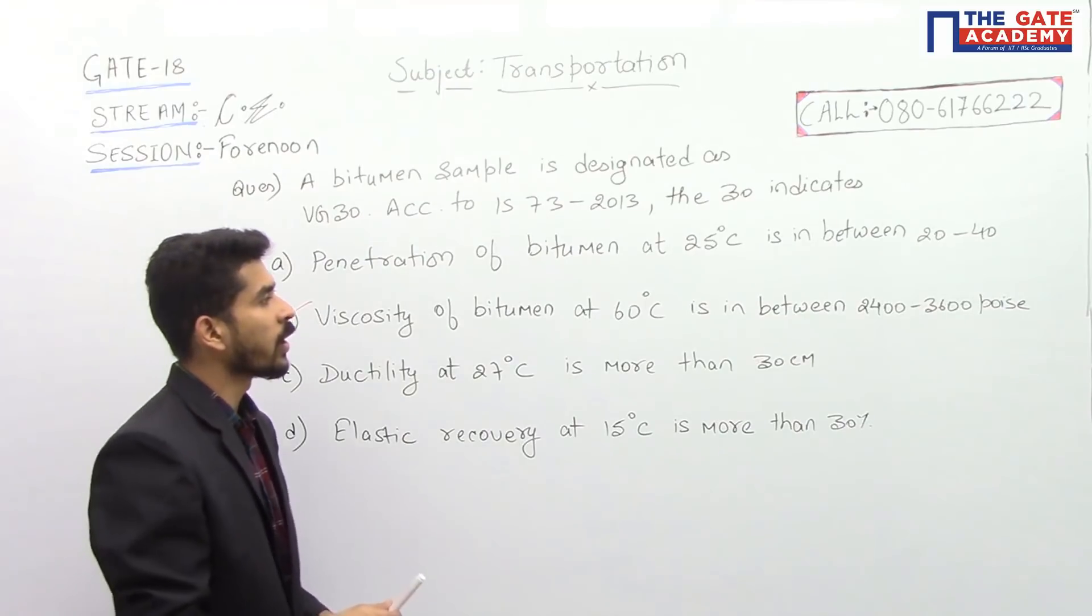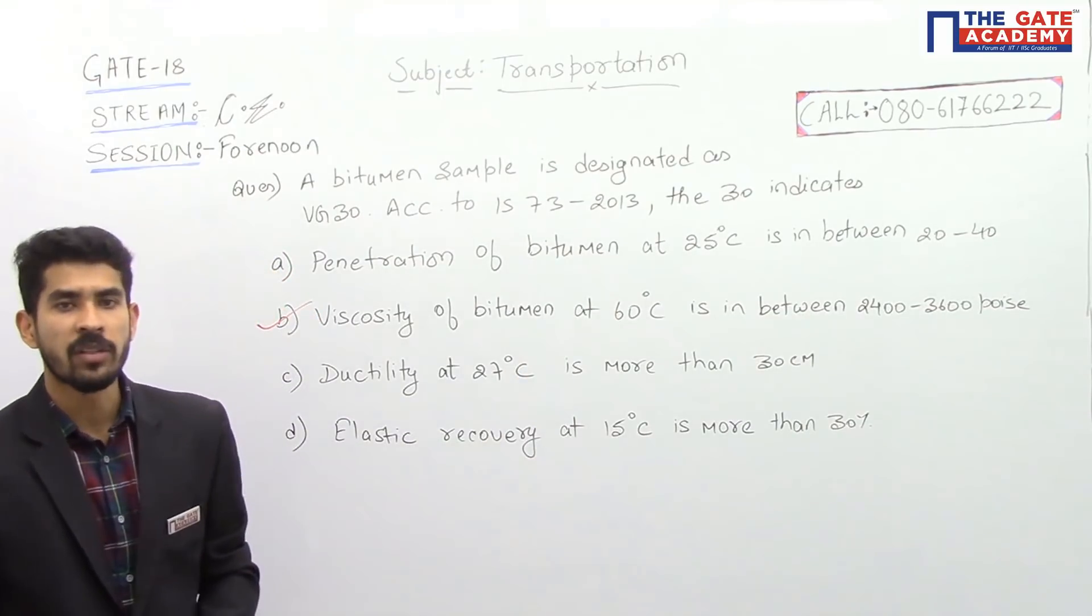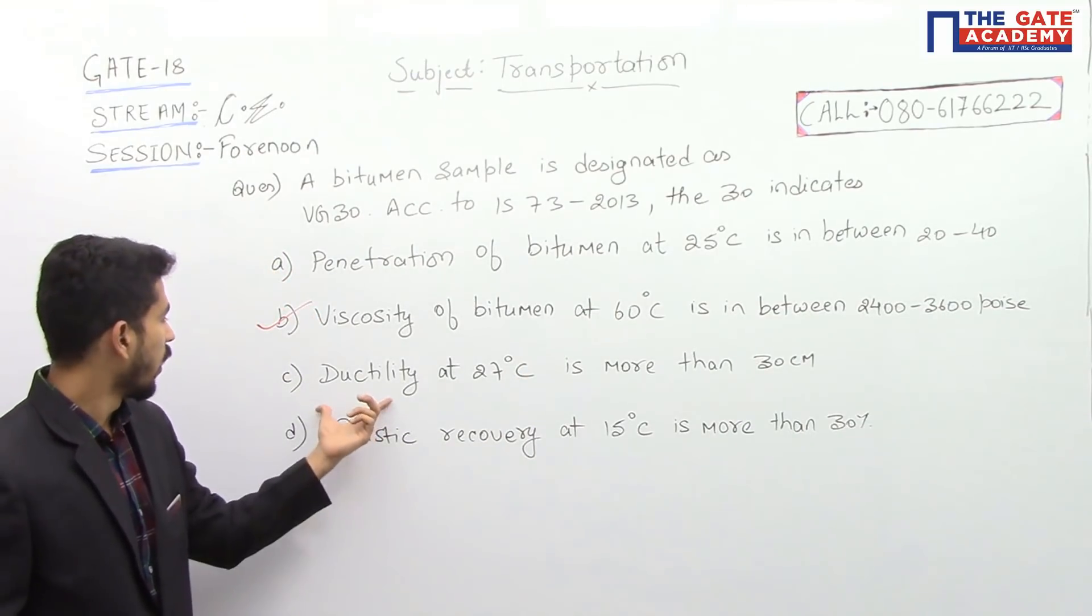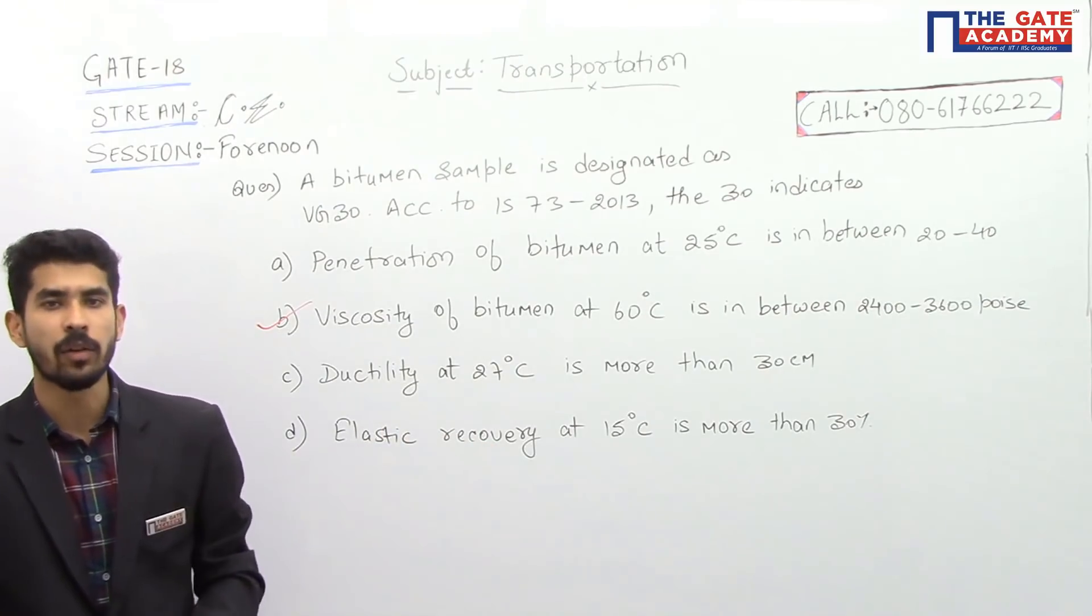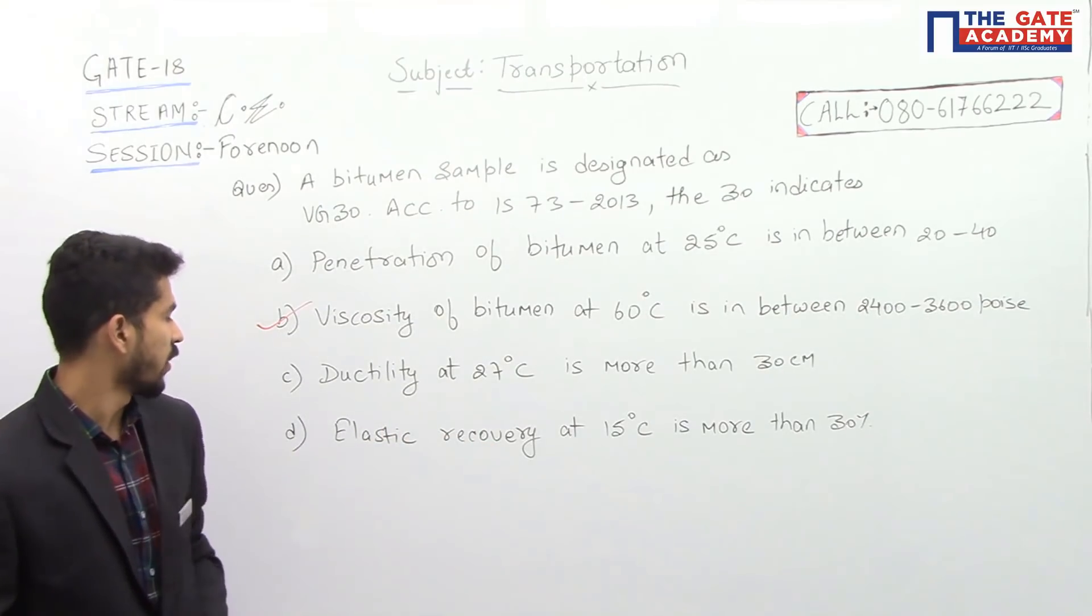The first option says 20 to 40 but it is in between 50 to 60, and in option C it is at 25 degrees C not at 27 degrees C, so this is incorrect.